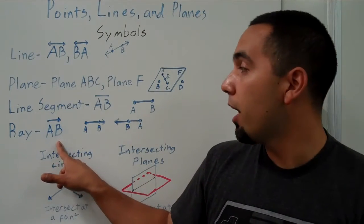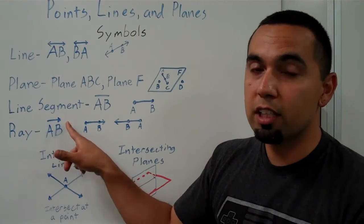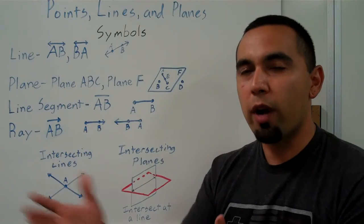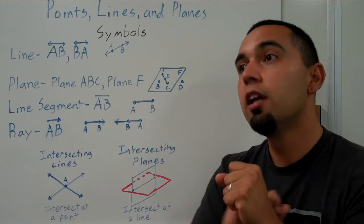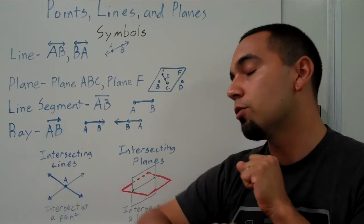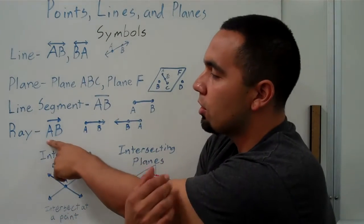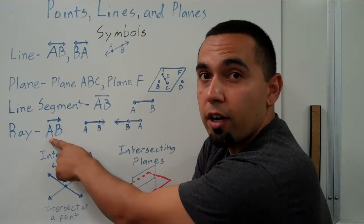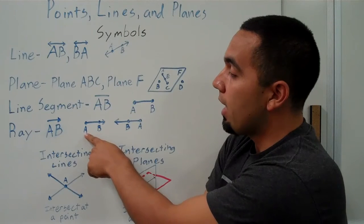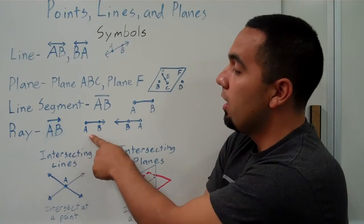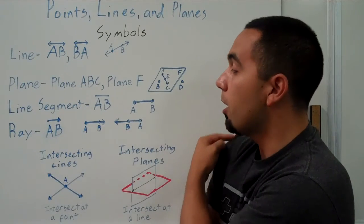We also have ray. Now, ray, we identify with a line with one arrow, and that's because a ray is just like a ray of light. It has a starting point or an endpoint, and it goes in one direction. It goes in one direction forever. And we always, always have to start our rays with our endpoints. So this ray right here we call ray AB because it starts at A, and it goes in the direction of B, and it just keeps going on and on forever.